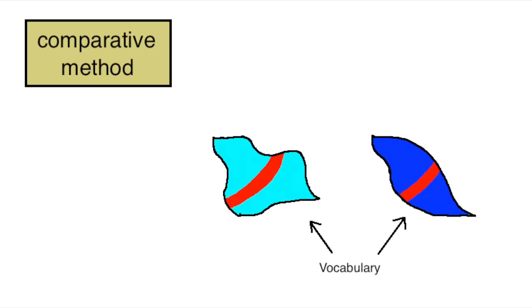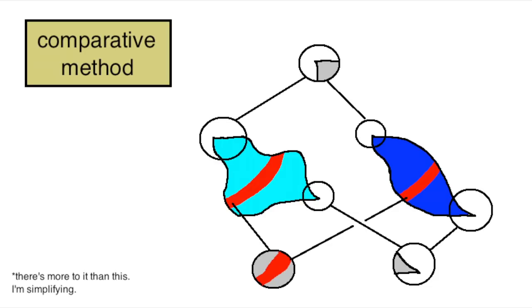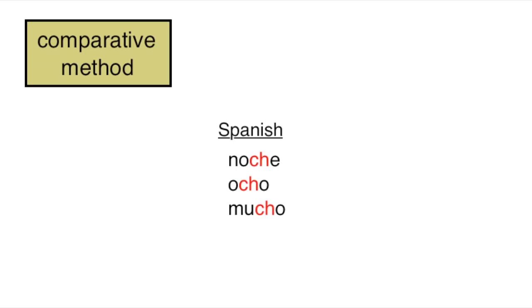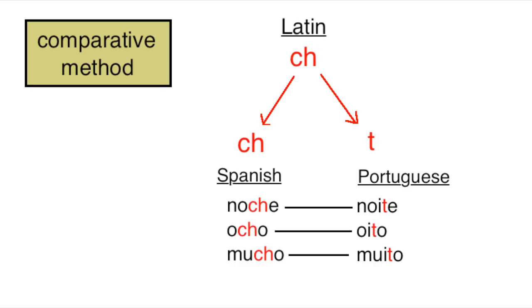It works mostly by comparing the vocabularies of languages and looking for regular patterns between them. Like, where Spanish has the CH sound in its word for a thing, Portuguese will usually have a T sound in its word for that same thing, suggesting that maybe they had a common ancestor with the CH sound and in Portuguese it changed to a T sound. Or maybe the other way around, this is too little to tell.